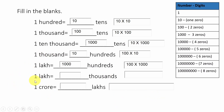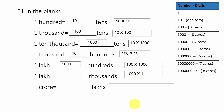Next: one lakh equals how many thousands? One lakh should be written as a product of thousands — thousand into what number? One lakh means five zeros. Thousand already has three zeros, so we need two more zeros. The answer is hundred. So one lakh equals hundred thousands.